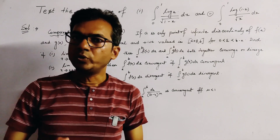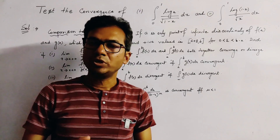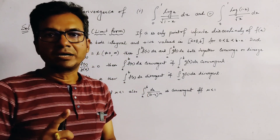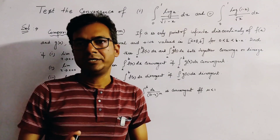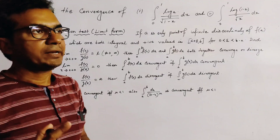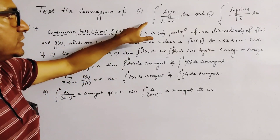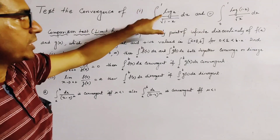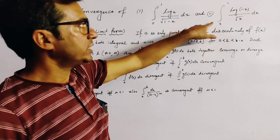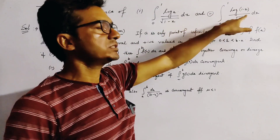In this class, we discuss the convergence of two improper integrals. This is a class of improper integrations from real analysis. We take two problems: the first one is integration 0 to 1 of log x by root(1 minus x) dx, and the second one is integration 0 to 1 of log(1 minus x) by root x dx.